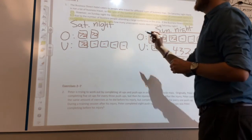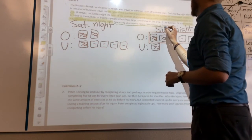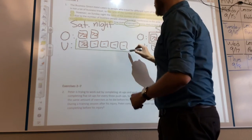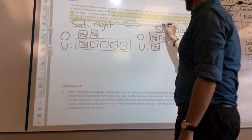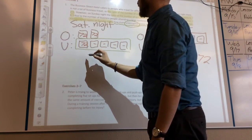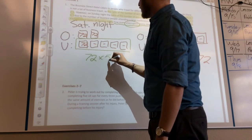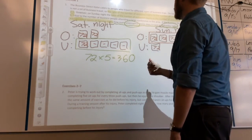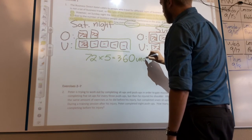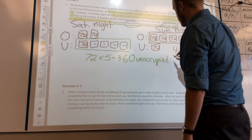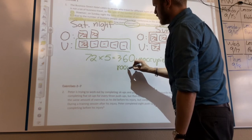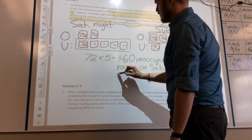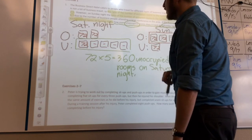We can now solve what the problem is asking: how many unoccupied rooms on Saturday night? The unoccupied rooms on Saturday are represented by 5 groups. So 72 times 5 equals 360. The answer is 360 unoccupied rooms on Saturday night.